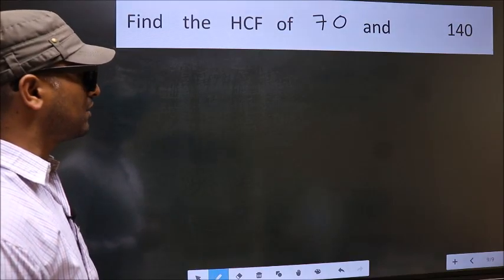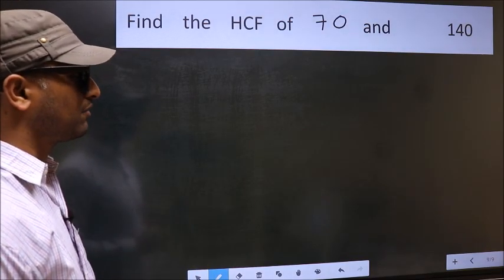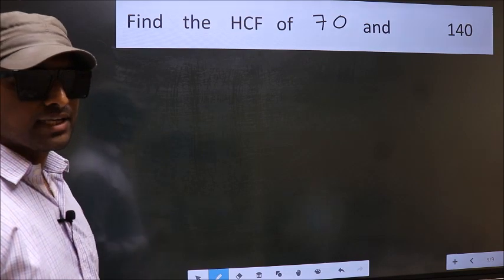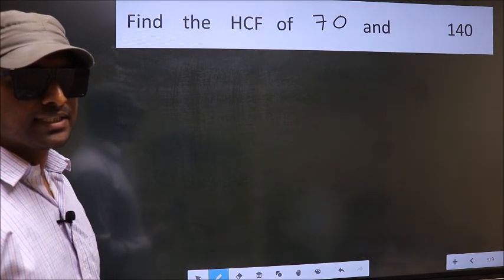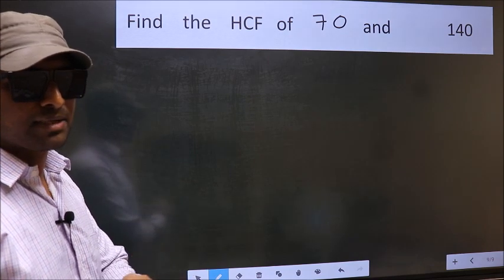Find the HCF of 70 and 140. To find the HCF, we should do the prime factorization of each number separately.